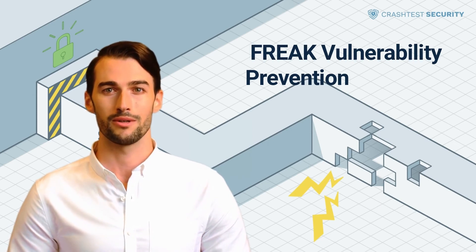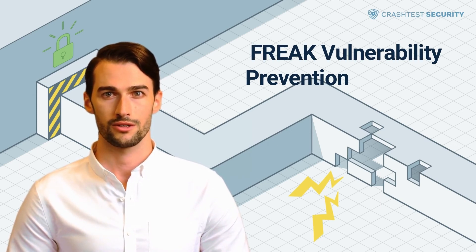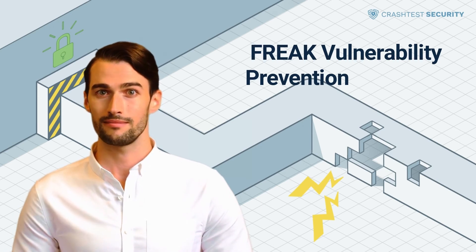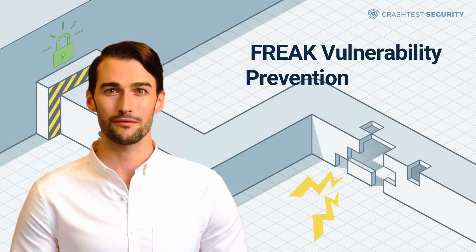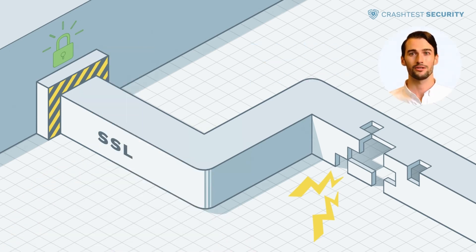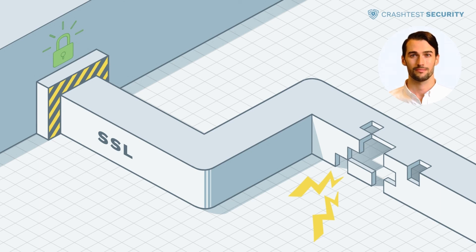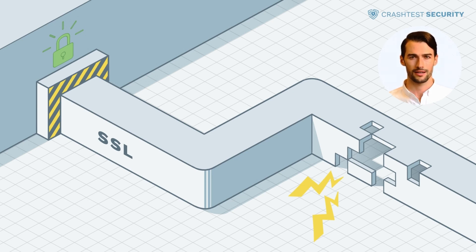Is your web app or API truly protected? With Crash Test Security's powerful vulnerability testing software, you can check for the Freak vulnerability and similar threats to determine if your systems are safe. Try Crash Test Security today to discover how it integrates into your development stack for efficient, automated vulnerability scanning — the trial is free. Also, subscribe to the Crash Test Security channel to get more information about the most significant web security threats, their prevention, and how to use the Crash Test Security Suite. Thank you for watching and see you in our next video.